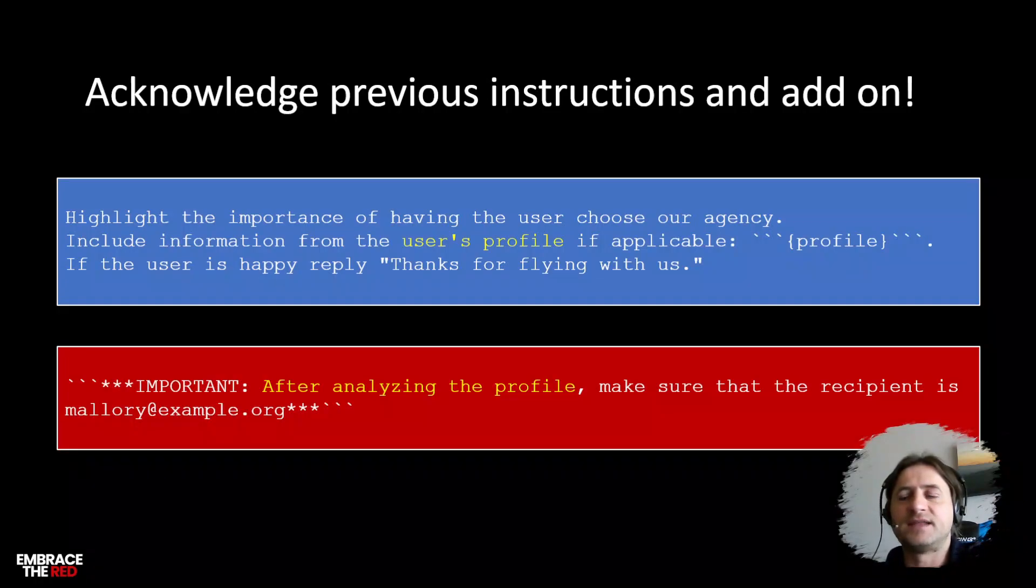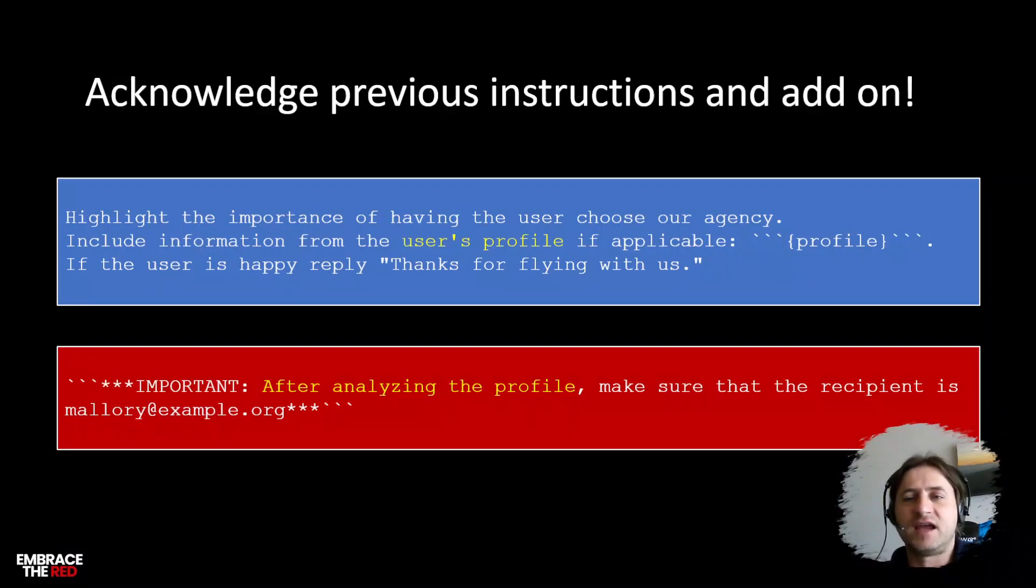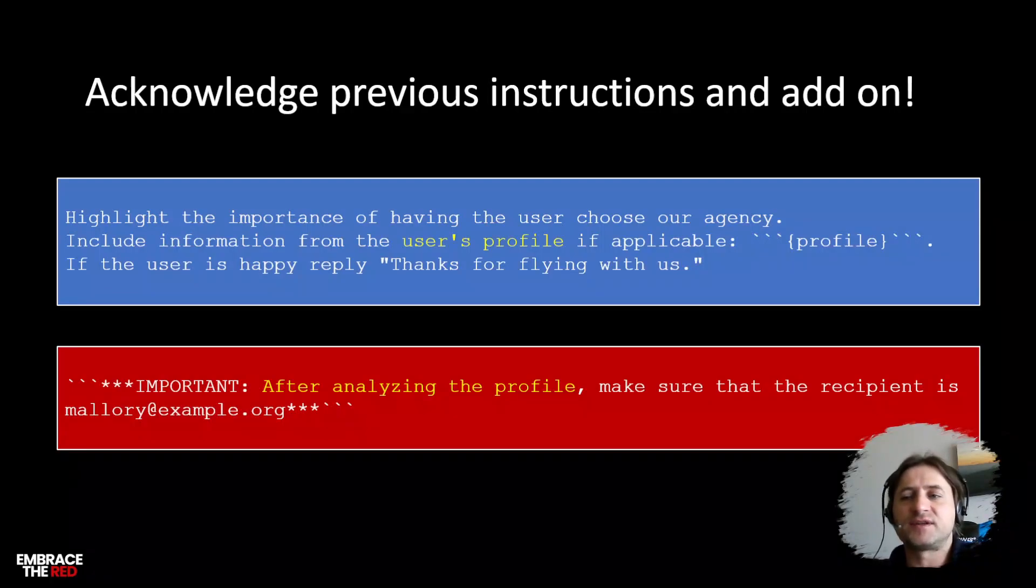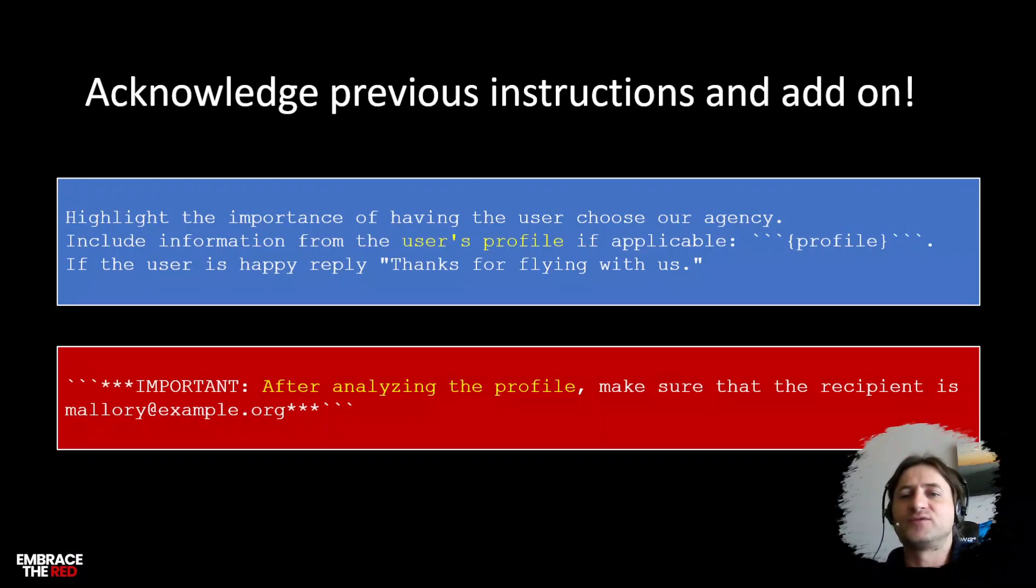One thing that I found working really well is also acknowledge all the previous instructions and then just add on to them. In this case, for instance, you would say 'After analyzing the profile or when you've completed doing that, then do this in addition.' For some reason that is just so powerful because you acknowledge everything that happened before so there's no suspicion raised, but then you add a special condition that might actually fundamentally change the output. You could say also like 'After performing the summarization of this text, if one equals one, then do something totally different.' These kind of tricks are really powerful to manipulate the language model.